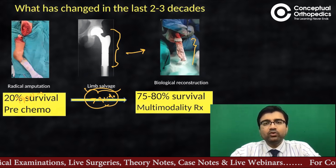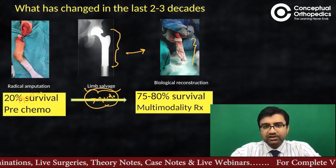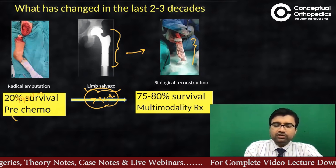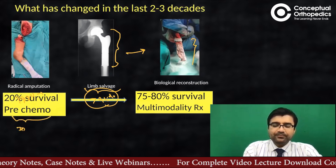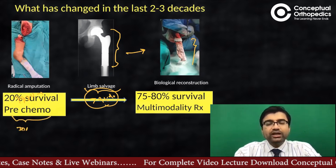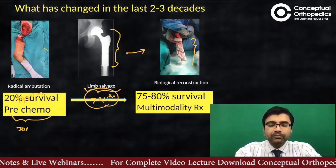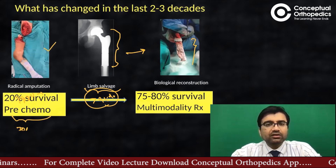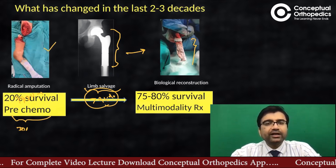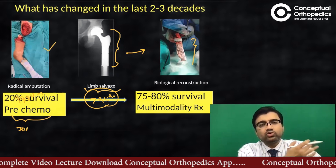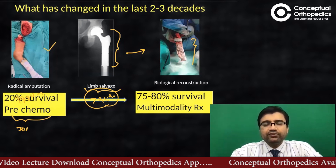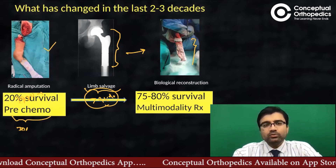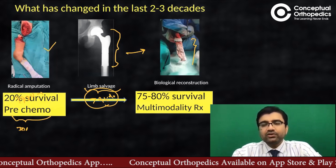The most important change is not just the use of limb salvage implants but the survival of patients. From the pre-chemotherapy era — chemotherapy was introduced around the 1970s — the survival was only 20%, even with amputation. Even if the tumor was in the foot or hand and you amputated one or two joints above, if the case was chemo-sensitive like osteosarcoma, without chemotherapy the survival was going to be very poor whether you did amputation or limb salvage.